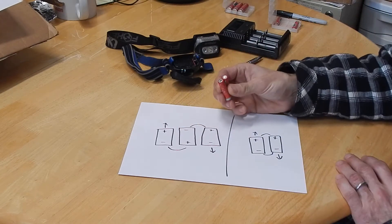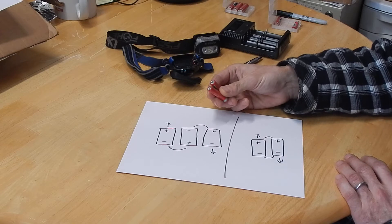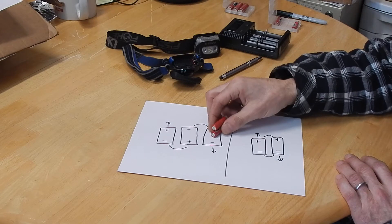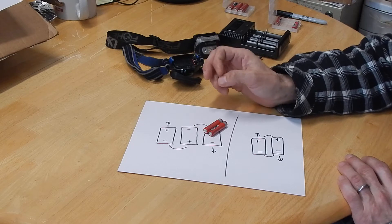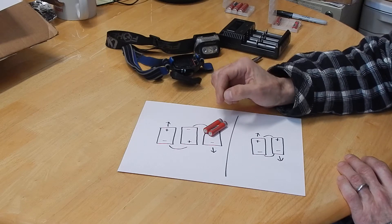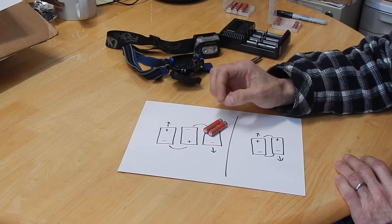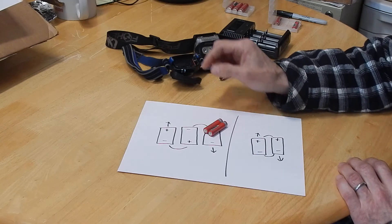Obviously, the answer is to connect them in parallel. The nice thing about connecting in parallel is that instead of increasing the voltage, you increase your capacity. So you increase your milliamp hours, your reserve time, which is ideal for a flashlight.